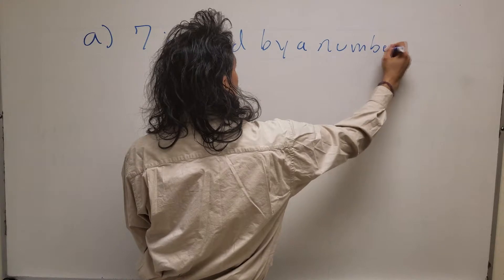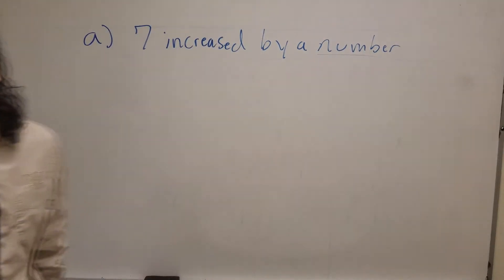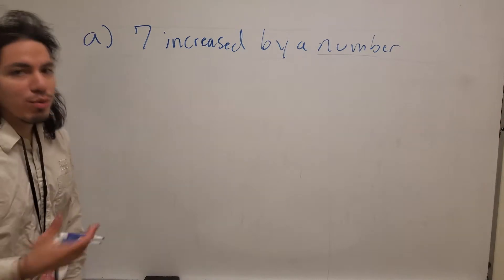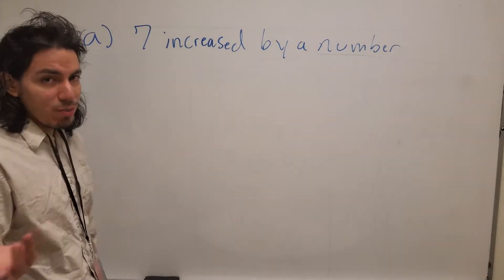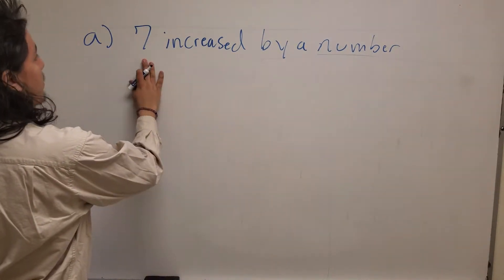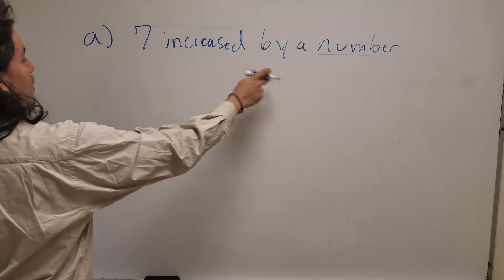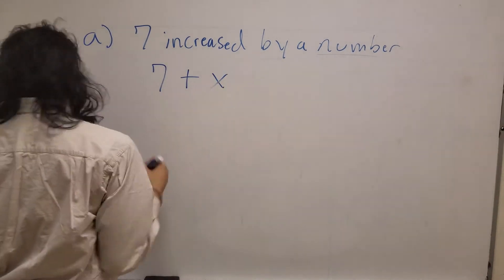Now most problems when they state a number, they mean an unknown number, unknown variable. It could be whatever you want it to be - could be m, could be y, could be z, could be x obviously. So if the question states 7 increased by a number, it's meaning 7 plus a number.